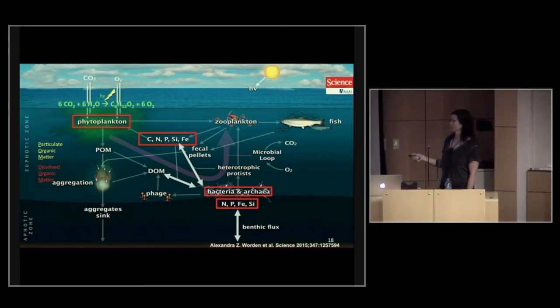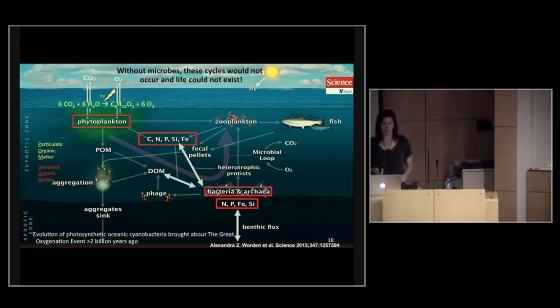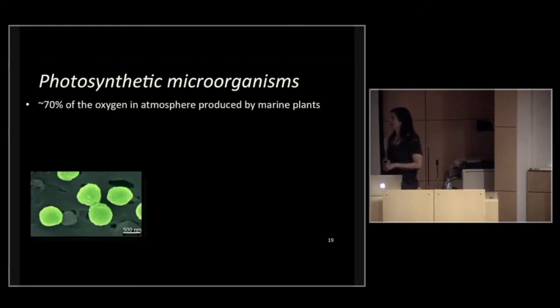If we look at other microbes, such as phytoplankton, they live in the upper ocean. And again, they produce CO2. I'm sorry, they don't produce CO2. They take up CO2 and they produce oxygen. Without this compilation of microbes, the phytoplankton and the bacteria, these cycles would not occur and life simply couldn't exist. In fact, the evolution of photosynthetic cyanobacteria brought about the great oxygenation event. That was over two billion years ago. These cyanobacteria within the ocean generated so much oxygen within the ocean that it supersaturated the ocean. And this oxygen then left the ocean and went into the atmosphere, giving us an atmosphere where we can live. And to date, we have 70% of the oxygen in the atmosphere is produced by marine plants or these marine microorganisms specifically.